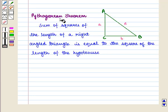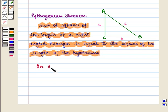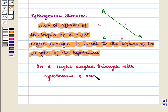We know that Pythagorean theorem states the sum of squares of the length of a right-angled triangle is equal to the square of the length of the hypotenuse. That is, in a right-angled triangle with hypotenuse C and sides A and B, we have C² = A² + B².